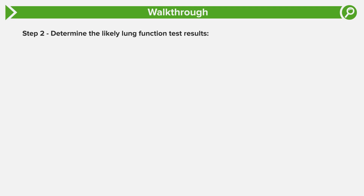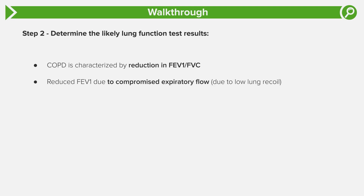Now that we've determined this patient has COPD and reviewed the two clinical subtypes, let's determine the likely lung function test we would expect. COPD is characterized — and this is very important — by a reduction in the FEV1 to FVC ratio. This reduction is due to a reduced FEV1, which is caused by compromised expiratory flow from both inflammation and excess mucus, as well as decreased lung recoil from alveolar membrane breakdown. Patients will have a normal vital capacity, so the numerator decreases while the denominator stays the same, and thus the ratio reduces overall.